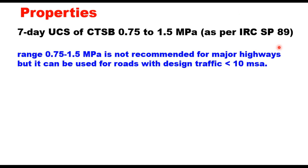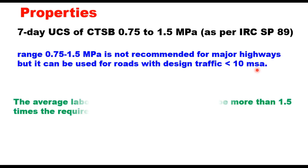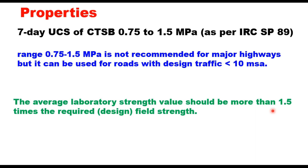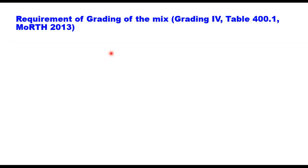IRC SP 89 suggests the seven-day UCS of CTSB as 0.75 to 1.5 MPa, but this should be used only for low volume roads where design traffic is less than 10 MSA. For major highways, the UCS should be 1.5 to 3 MPa. The average laboratory strength value should be more than 1.5 times the required field strength as a factor of safety — so if you are targeting 1.5 MPa in the field, you should get 1.5 × 1.5 = 2.25 MPa in the laboratory.